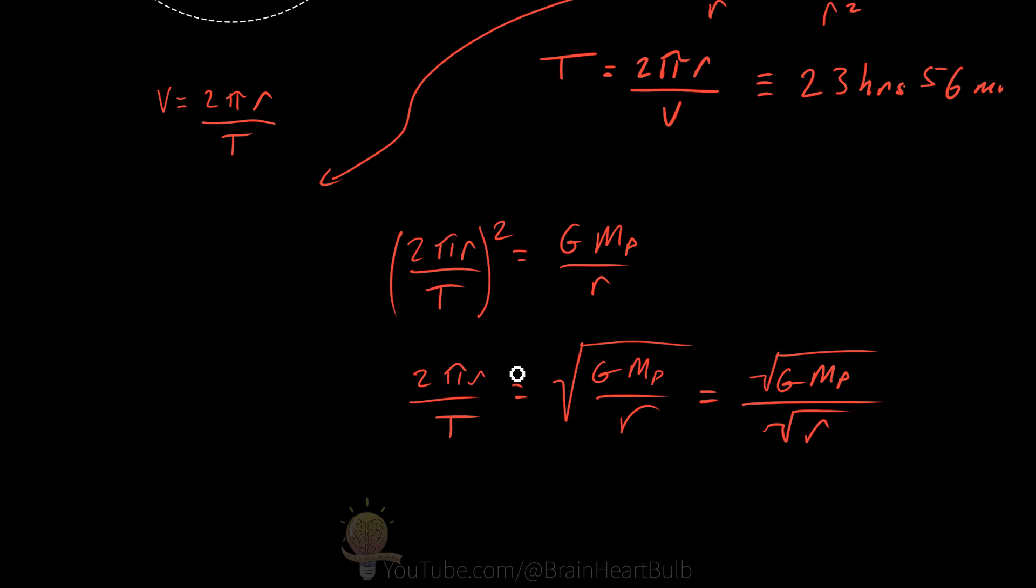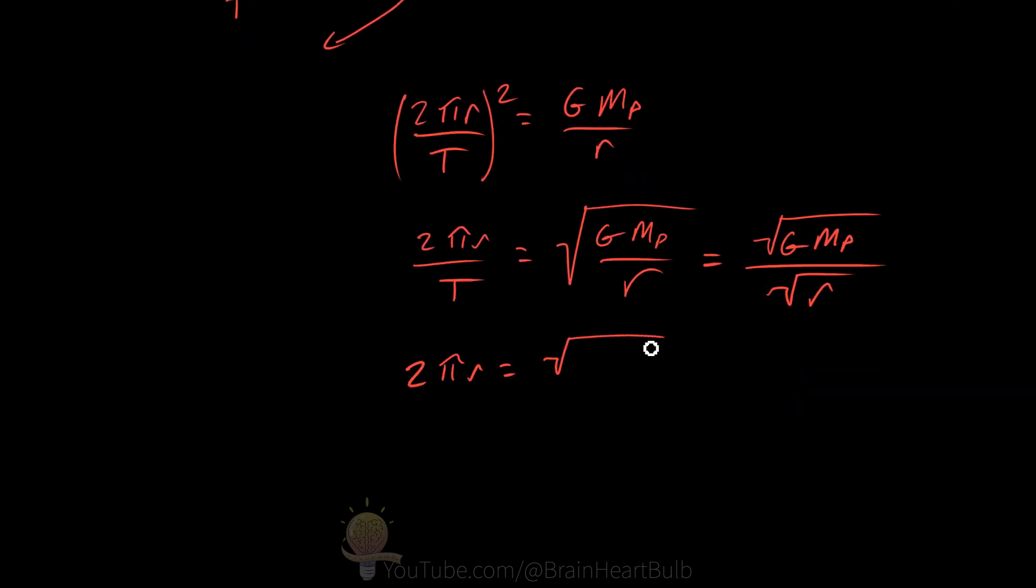Multiply both sides by the period. And divide 2 pi on both sides. And let's move this root over to the left-hand side. When we have two bases multiplied together, we add their powers. So the radius to the power of 3 over 2 is equal to the gravitational constant to the power of half, the mass of the planet to the power of a half, multiplied by the period, divided by 2 pi.